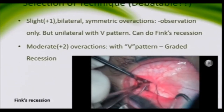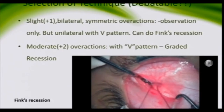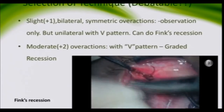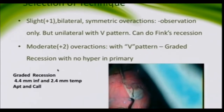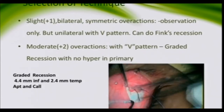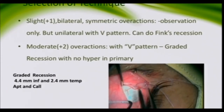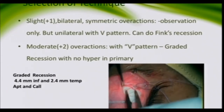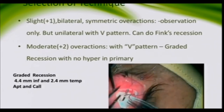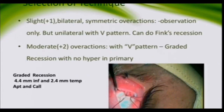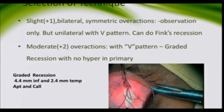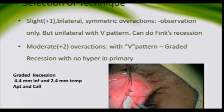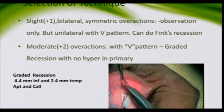This is a graded recession of Apt and Call: the inferior oblique is recessed 4.4 millimeters and 2.4 millimeters temporal to the inferior rectus, giving a recession of 10 millimeters. This is a pure recession — there is no anteriorization effect in a graded recession of Apt and Call, so that measured from inferior rectus gives a graded recession without any anteriorization effect.